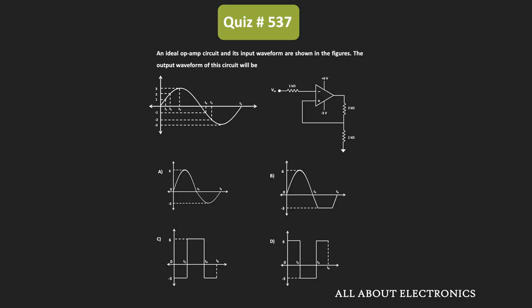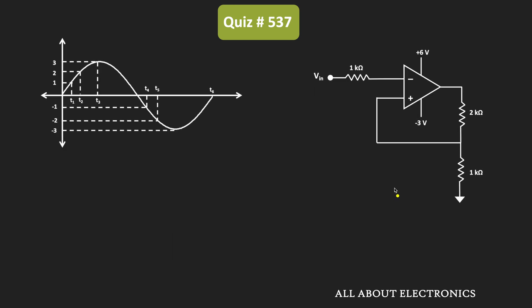Welcome to the YouTube channel all about electronics. In this question, we've been given an ideal op-amp circuit, and as shown in the figure, an input sine wave signal is applied to this op-amp circuit. We've been asked to find the output waveform of the given circuit.